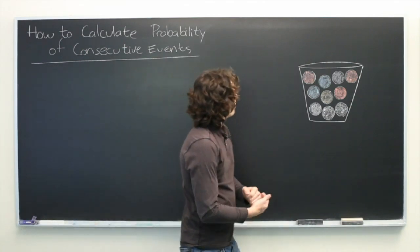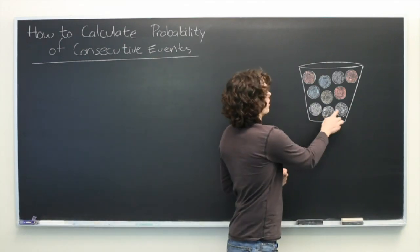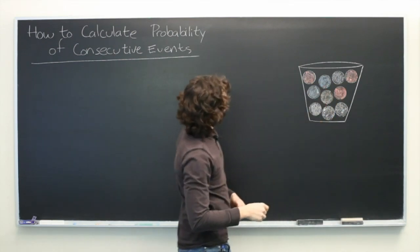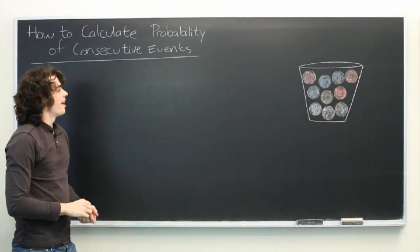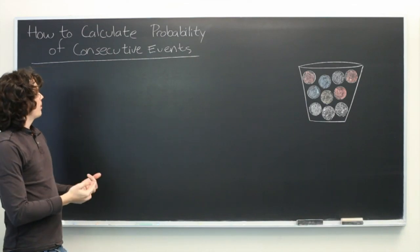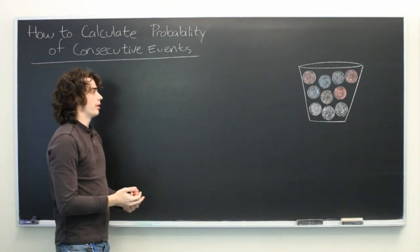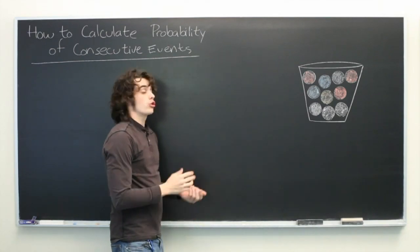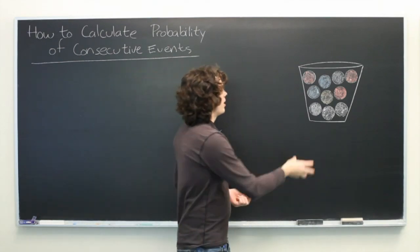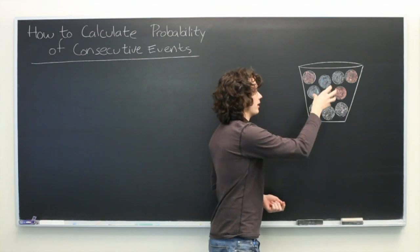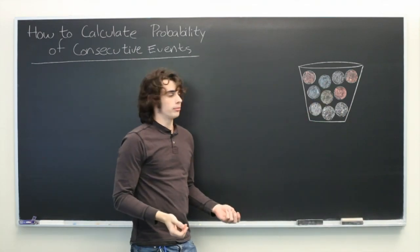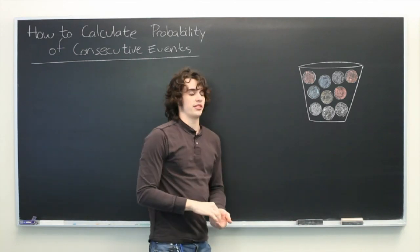Here we have a bucket with ten balls in it. Four of them are white, three are red, two are blue, and one is brownish yellow. What we want to be able to do is calculate the probability of consecutive drawings of balls, where we're assuming for this problem that each ball is equally likely to be picked, which may not always be true in the real world, but we'll assume it's true for this example.